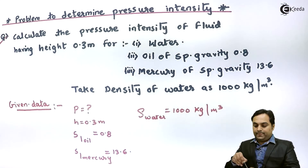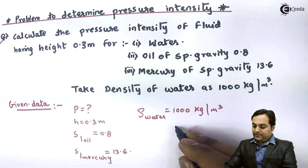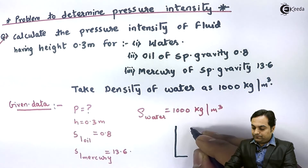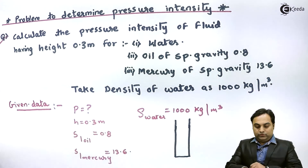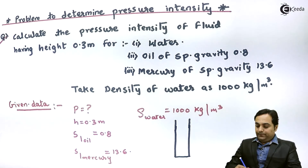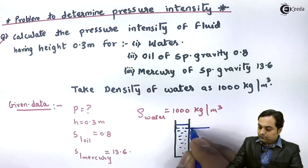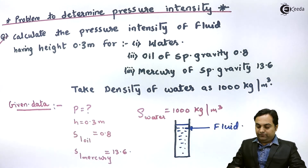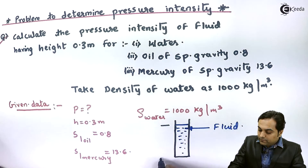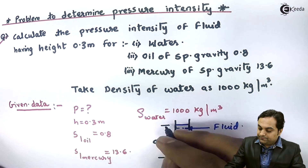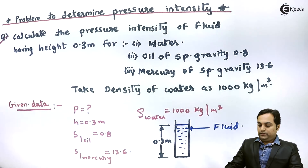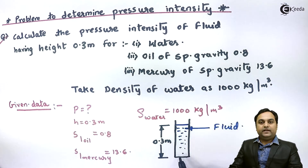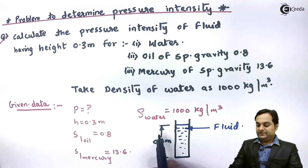The height can be shown as an example: we have a column filled with fluid, and this column has a height of 0.3 meter. We have to find out how much pressure will be exerted by this fluid at the bottom end, since the height of 0.3 meter is given from the free surface of the fluid.